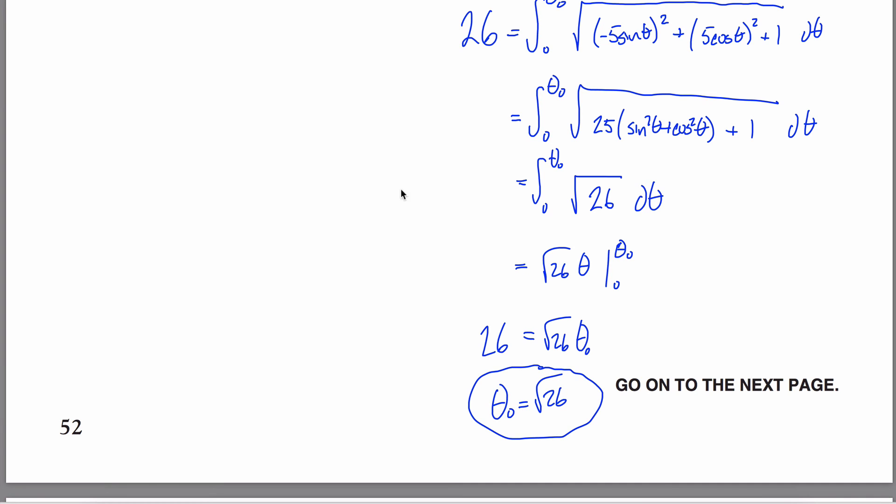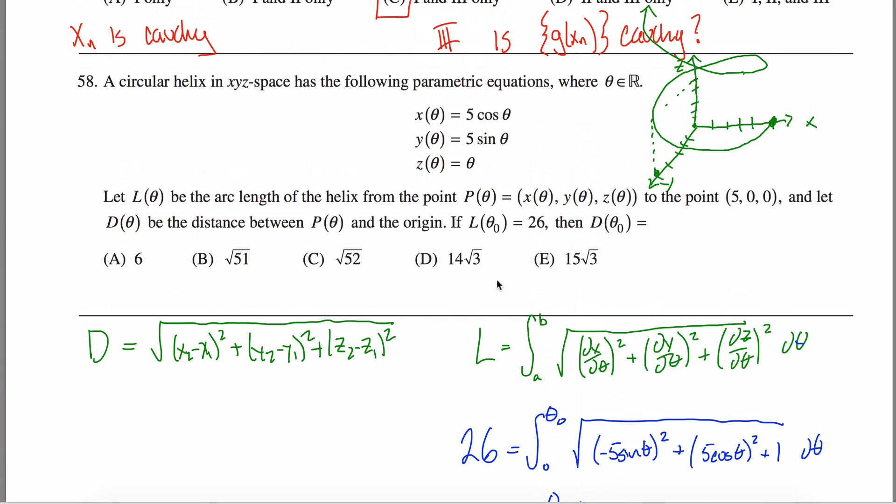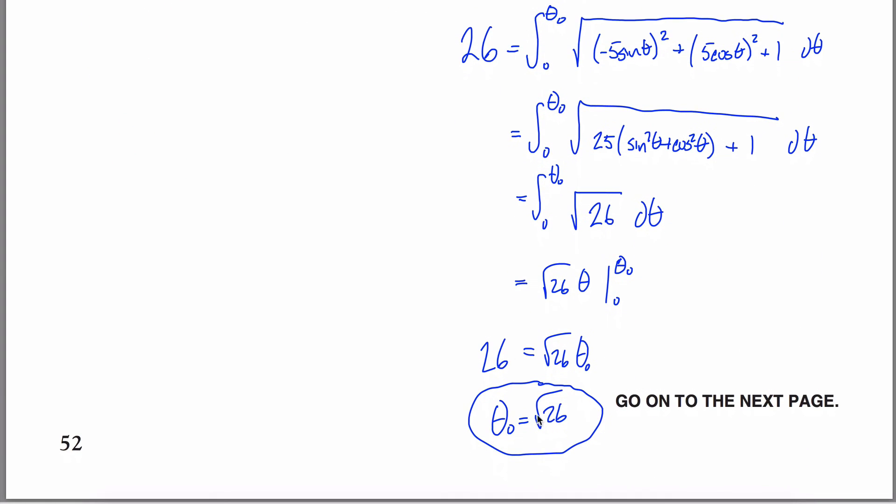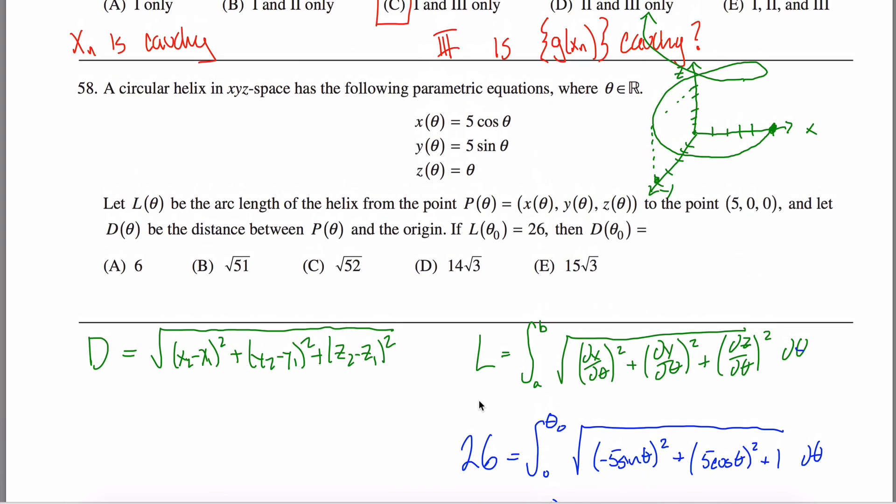What if they listed that as an answer? It doesn't look like it. No rationalized form. Theta naught is root 26. That gives me a lot of information that tells me which point I'm talking about here. So I've traveled a distance of root 26. So just over five, my height is just over five. So I'm just past this point, talking about somewhere up in here, I guess. And what I want to know is what is D of theta naught? What is D of root 26?